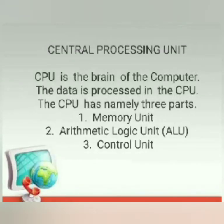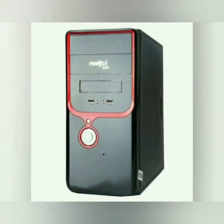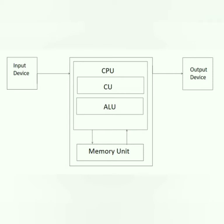The CPU is the brain of the computer and is used to process the data. The CPU has mainly three parts: memory unit, arithmetic logic unit, and control unit. The CPU plays an important role as the processing unit. It receives the input, makes all the processing by storing the data in the memory unit, and after processing, it displays the output with the help of the output device.